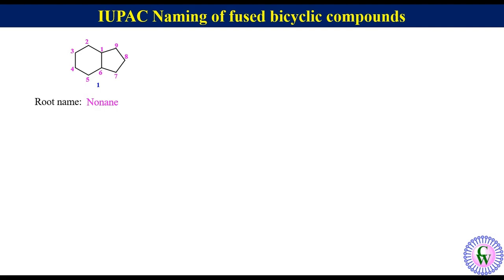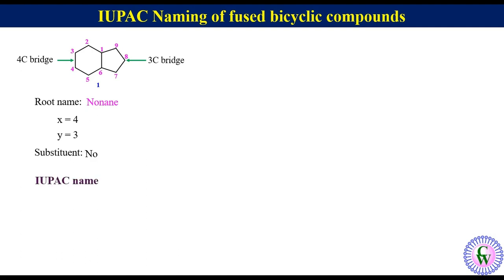There is a 4-carbon bridge and a 3-carbon bridge, so x is equal to 4 and y is equal to 3. There is no substituent. The IUPAC name will be bicyclo[4.3.0]nonane.